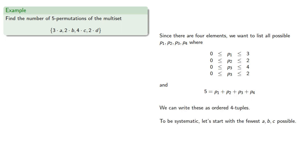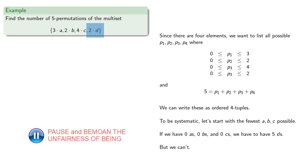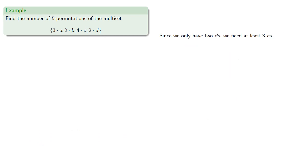And to be systematic, let's start with the fewest a, b, and c possible. If we have 0 a's, 0 b's, and 0 c's, then since this is supposed to be a 5 permutation, we have to have 5 d's. But we can't, since our set only has 2 d's. And in fact, since we only have 2 d's, we need at least 3 c's. So we can have 0 a, 0 b, 3 c, and 2 d, which we'll record as the ordered tuple, and this will give us permutations.